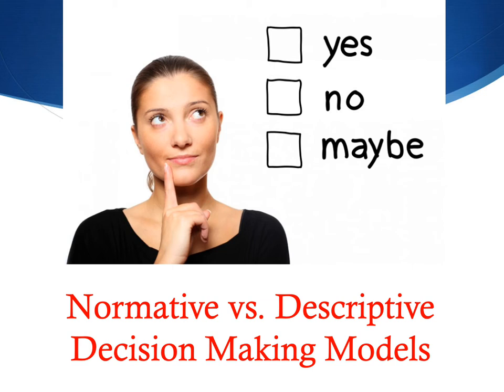Normative decision-making models make the assumption that people are rational decision makers who will always choose the most optimal solution and that they're good at making these kinds of decisions.